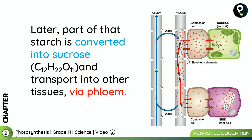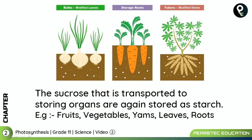Part of that starch is converted into sucrose — C12H22O11 — and transported into other tissues via the phloem. The sucrose transported to storing organs is again stored as starch. So there is a conversion happening: part of the glucose is transferred as sucrose, and then sucrose is once again stored as starch.